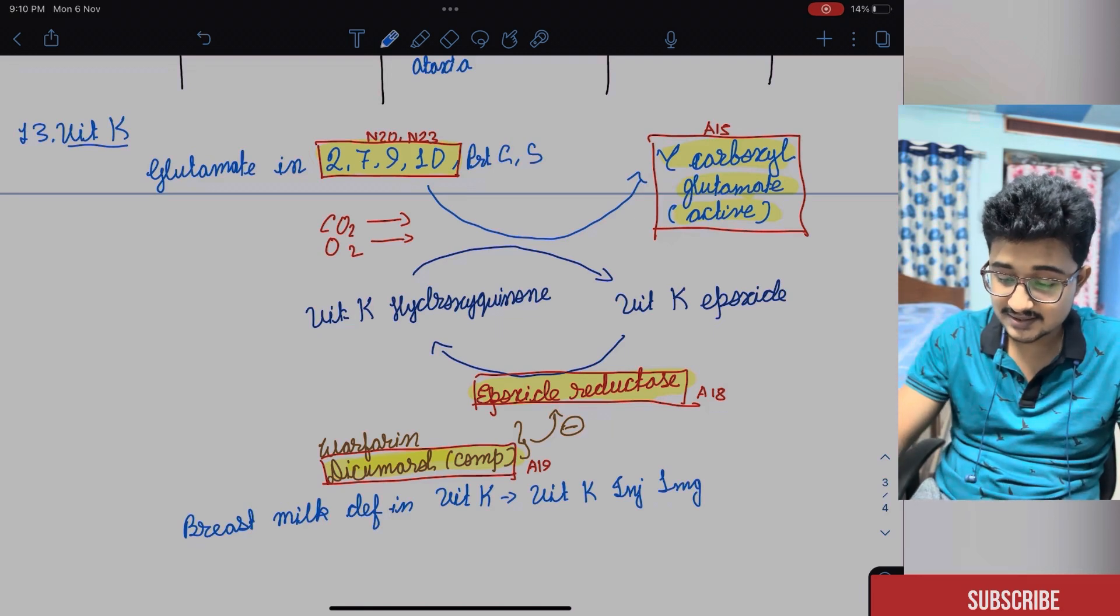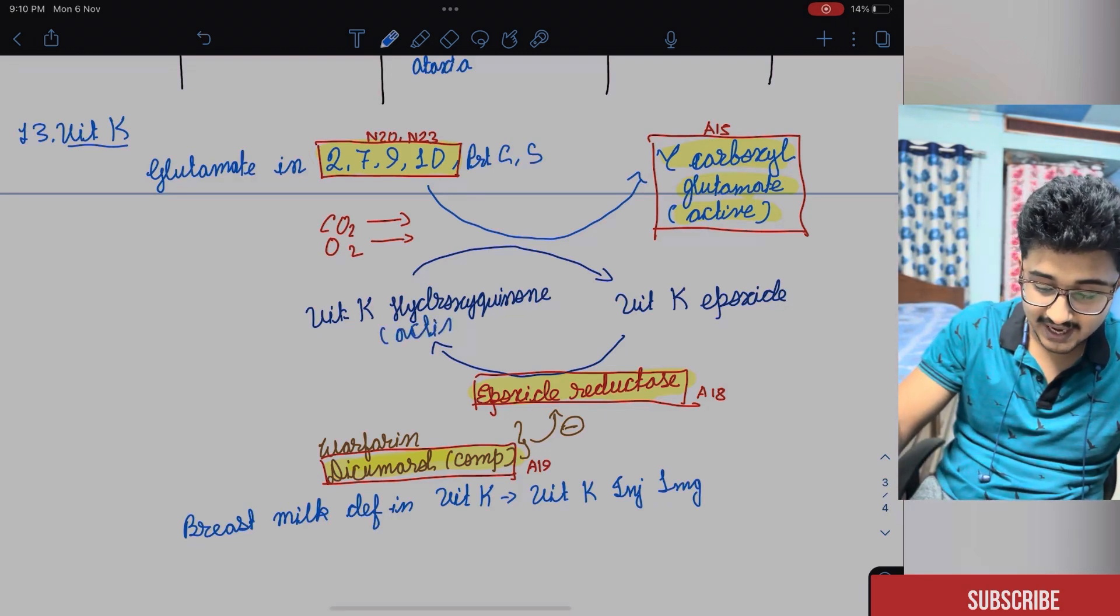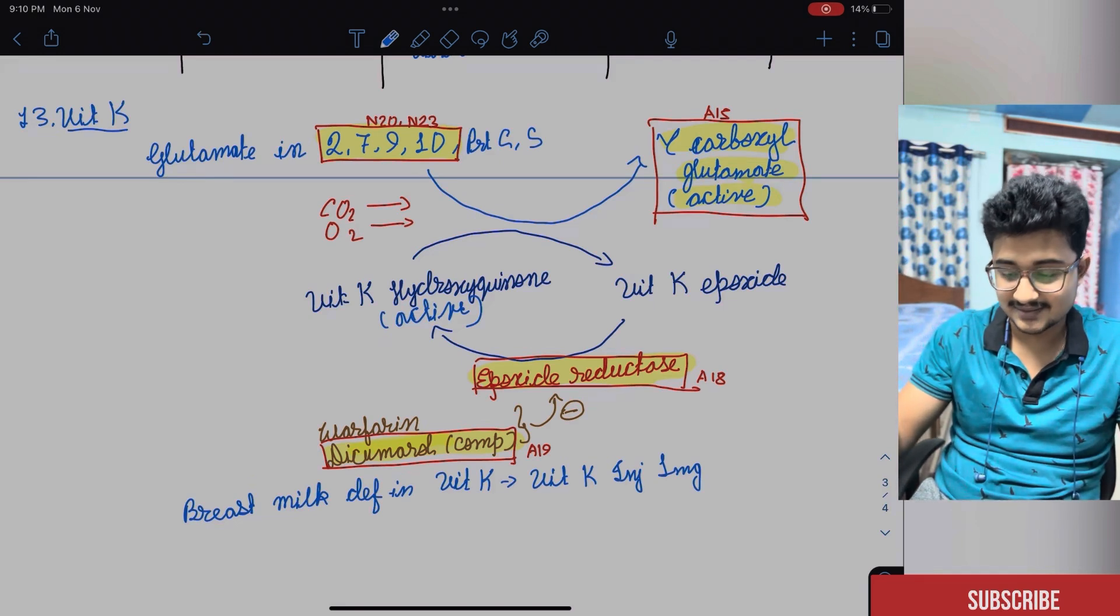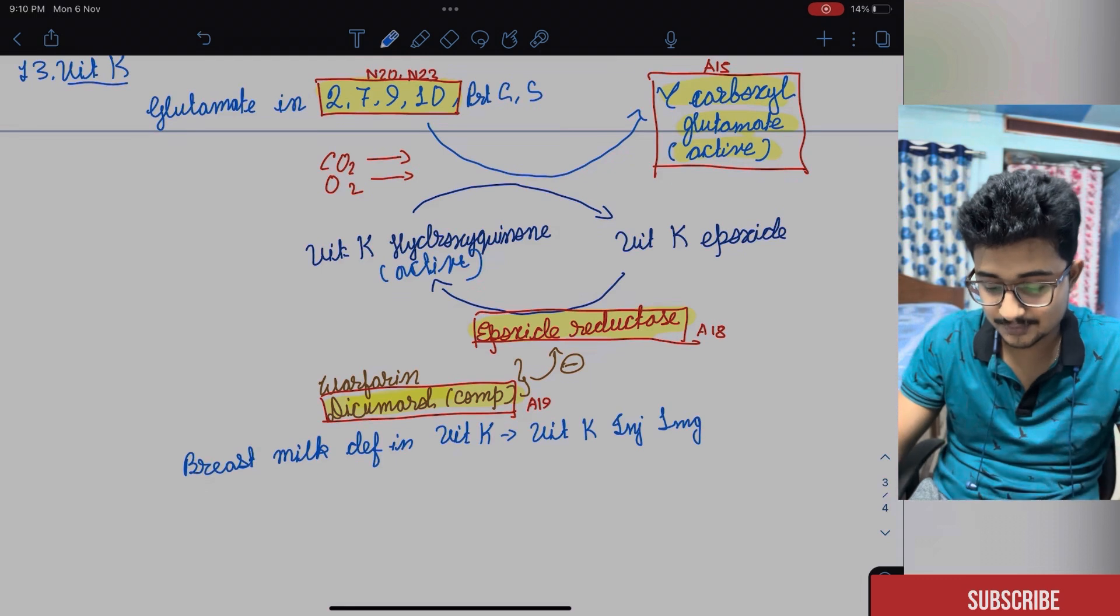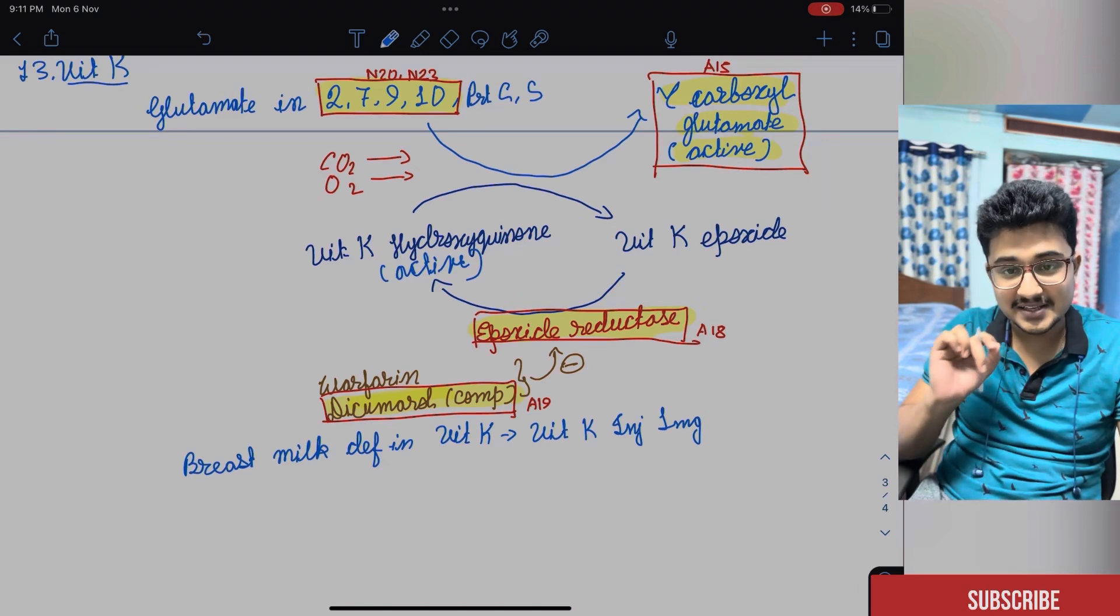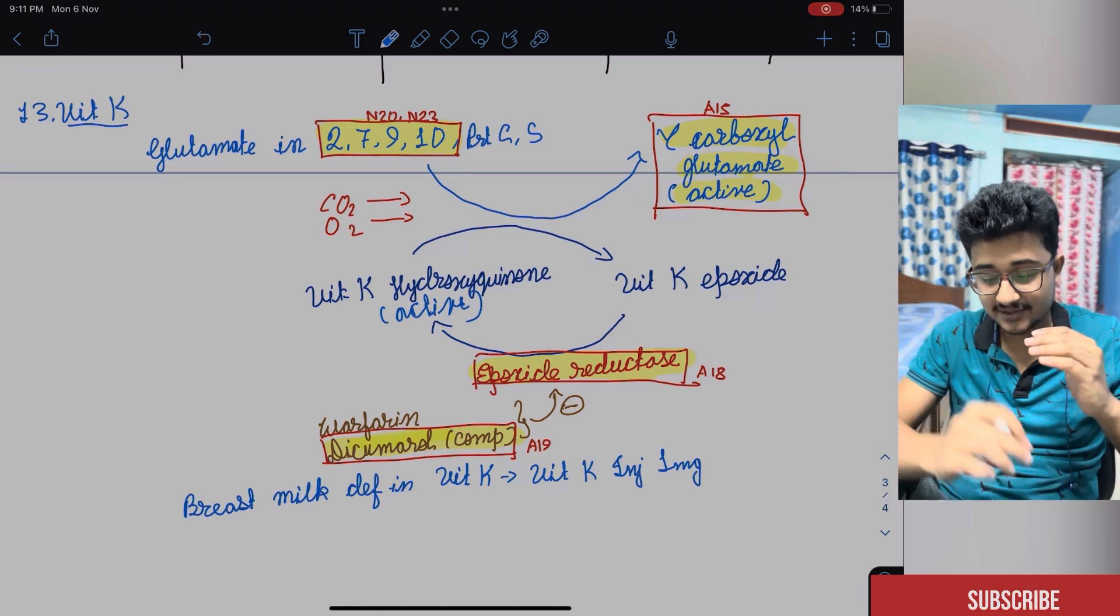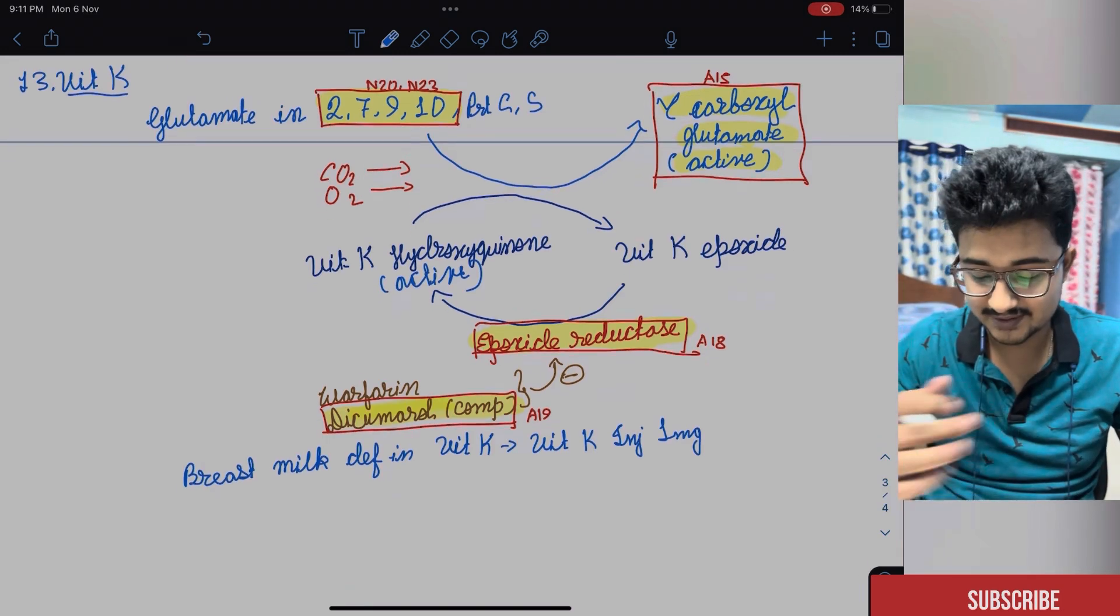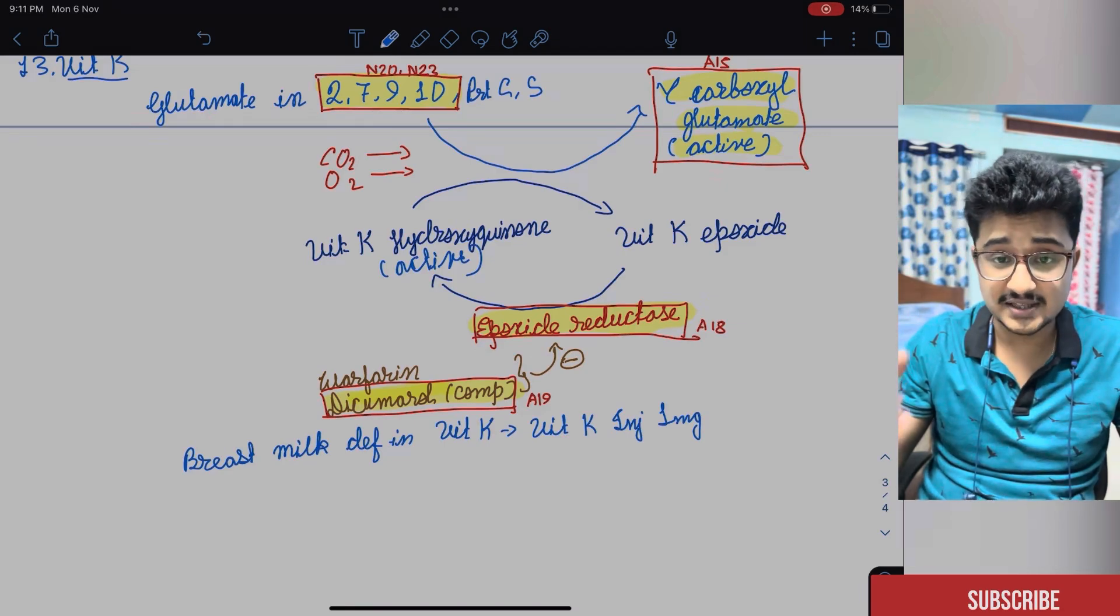Now in AIMS 18, what they asked is that vitamin K is again converted to the active form. This is the active form. The active form is being converted by epoxide reductase. First time gamma glutamate, gamma carboxyglutamate, after that epoxide reductase. Now what inhibits the epoxide reductase and by what mechanism? So it was asked that dicumarol inhibits epoxide reductase by competitive inhibition. This was asked in AIMS. The topic is same, but they are going to add an add-on point and from that another point, they are going to extract a new question. So AIMS is like that. The topic is same but it goes into very much depth of it. And breast milk is deficient in vitamin K. And vitamin K injection of 1 mg is given to the neonates.